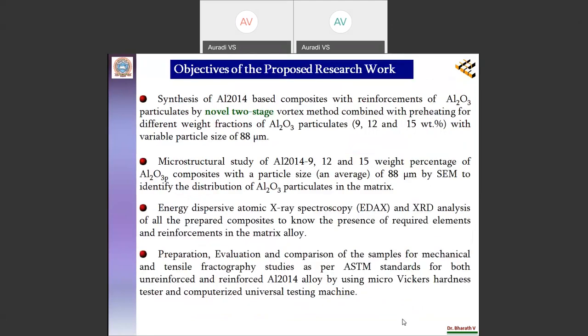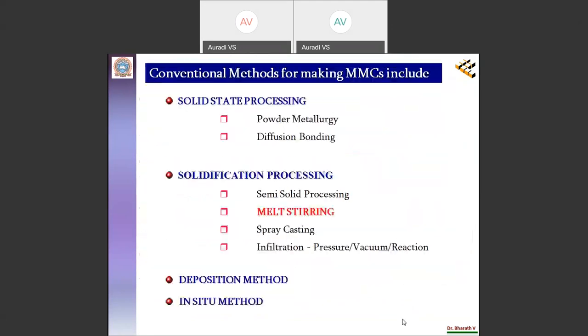Based on the motivations, the following objectives are defined. Following are the methods available for producing the MMCs. Among these, in the present work, melt stirring has been used to produce the composite.